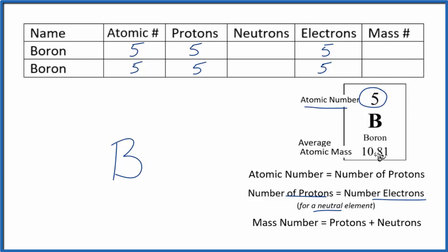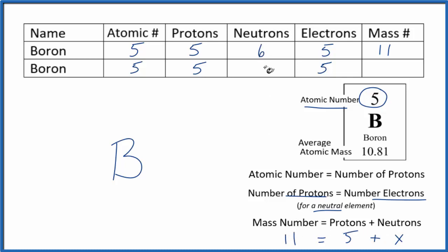If you're not given the mass number or the number of neutrons, you can look at the average atomic mass. For boron it's 10.81, and we round that to the whole number 11. So the mass number is 11, which equals protons plus neutrons: 11 = 5 + neutrons, meaning neutrons = 6. Boron with a mass number of 11 has six neutrons.